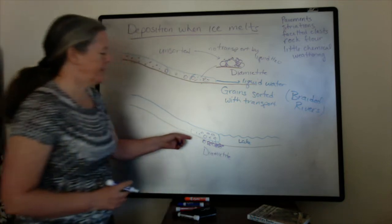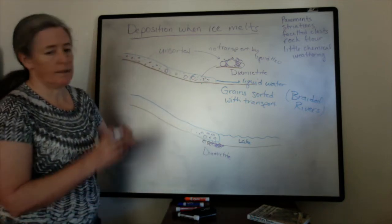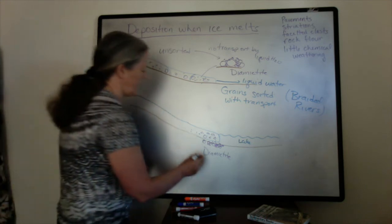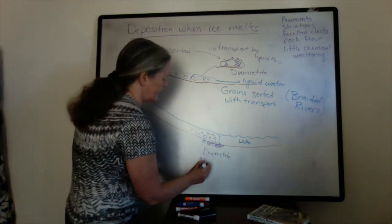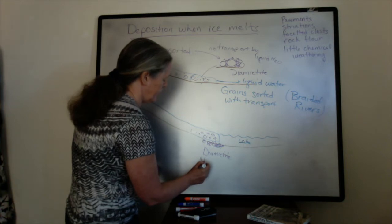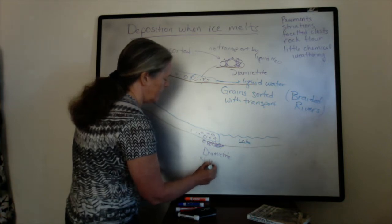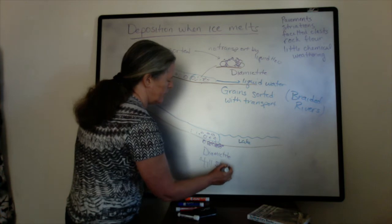And often in this particular case there's a big sheet of diamictite, and if you can demonstrate it's from a glacier it would be called till, a till sheet.